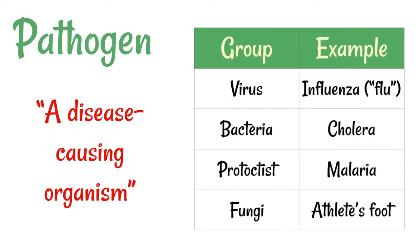When we talk about barriers to disease, what we're discussing is preventing pathogens from doing any damage to the body, either by stopping them from getting into the body in the first place or destroying them as soon as they do get in. Remember that a pathogen is just a disease-causing organism, and examples are things like viruses and bacteria.